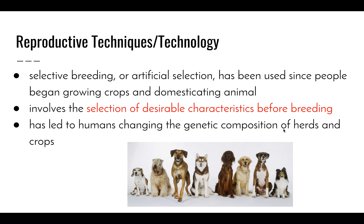Selective breeding or artificial selection has been around since people began growing crops and domesticating animals. Reproductive techniques involve the selection of desirable characteristics before the breeding process takes place — identifying a particular male and female with characteristics you wish to reproduce, then forcibly creating a reproductive relationship between those two organisms. This has led humans to changing the genetic composition of herds and crops over thousands of years, as seen in the many different breeds of dogs shown here.